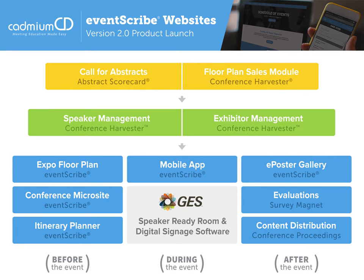Cadmium CD has been in the event industry for over 15 years. We've grown to be a company that services meeting planners a full year out from a meeting with products like the Abstract Scorecard for abstract submission and review, the Conference Harvester for booth rentals and sponsorship sales, through to speaker management and exhibitor management, and finally the blue products for attendees — exhibitor floor plans, itinerary planner, mobile app, e-posters, evaluations, speaker ready room. We work with meeting planners with a vertically integrated suite of products throughout the entire year, even servicing attendees after the conference with products like the conference proceedings or evaluations.